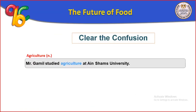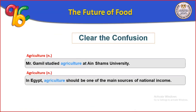Agriculture (الزراعة) is the science of farming. But farming includes both agriculture and keeping animals. That is why a farmer both grows the land and keeps animals. Agriculture example: Mr. Gamil studied agriculture at Ain Shams University. Another example: In Egypt, agriculture should be one of the main sources of national income.